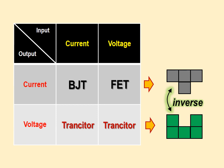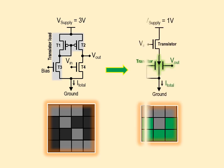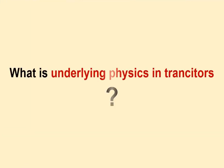As a practical example, transistor-based voltage amplifier needs four MOSFETs, whereas a transistor-trancitor combination just requires just two of them while providing the same functionality.